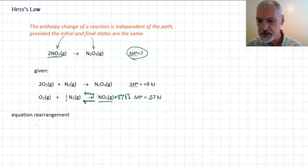So I'm going to rearrange this equation, turning it around first of all. So it's going to become nitrogen dioxide forming oxygen gas and a half nitrogen gas. And the enthalpy change now for this reaction, the reverse one, will become positive 57 kilojoules.